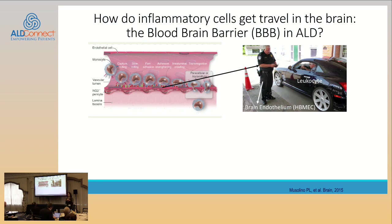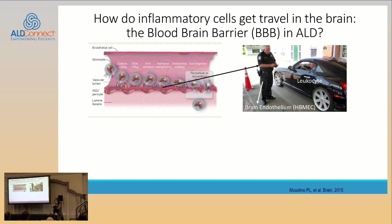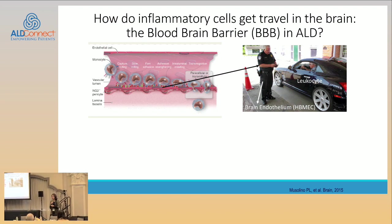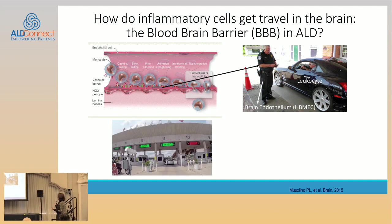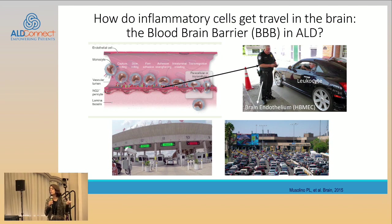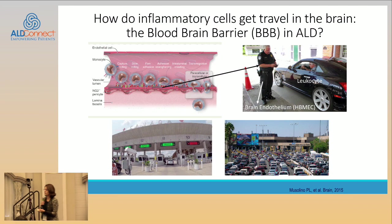The endothelium is like the border patrol at customs. If you're trying to get from Canada to the U.S., it doesn't matter how important you are — at some point you'll have to talk to the person at customs. That person at the border is the endothelial cell in the brain. They can decide that you pass or you don't. The inflammatory cell, in normal conditions, is not supposed to migrate into the brain and settle there or destroy it.